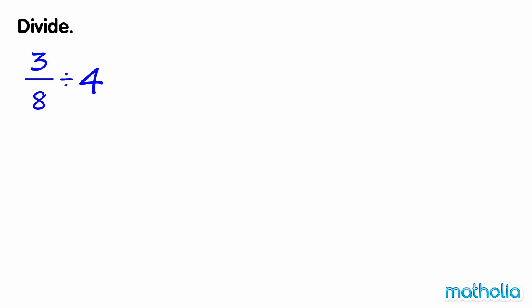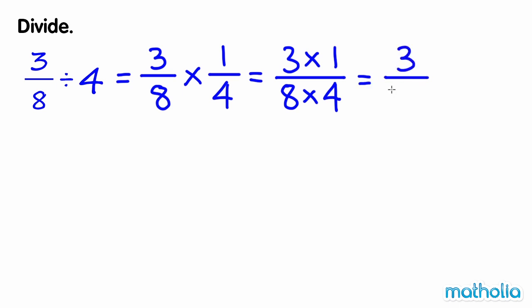Divide. 3 eighths divide 4 is equal to 3 eighths times 1 quarter, which is equal to 3 thirty-seconds. So 3 eighths divide 4 equals 3 thirty-seconds.